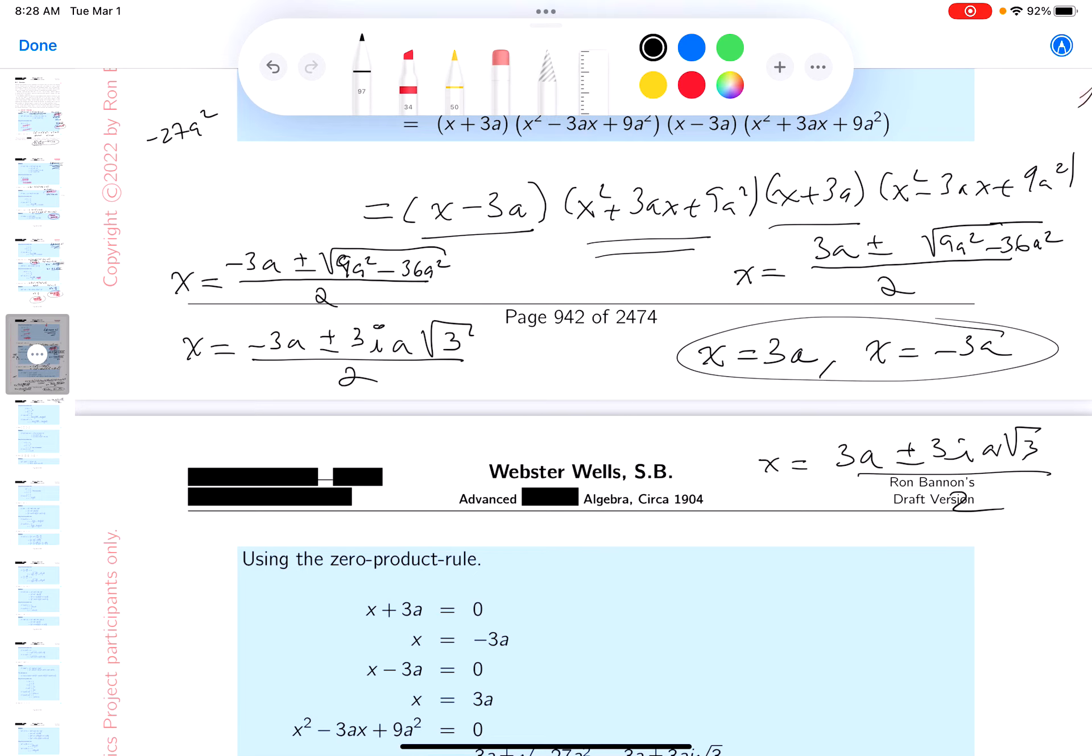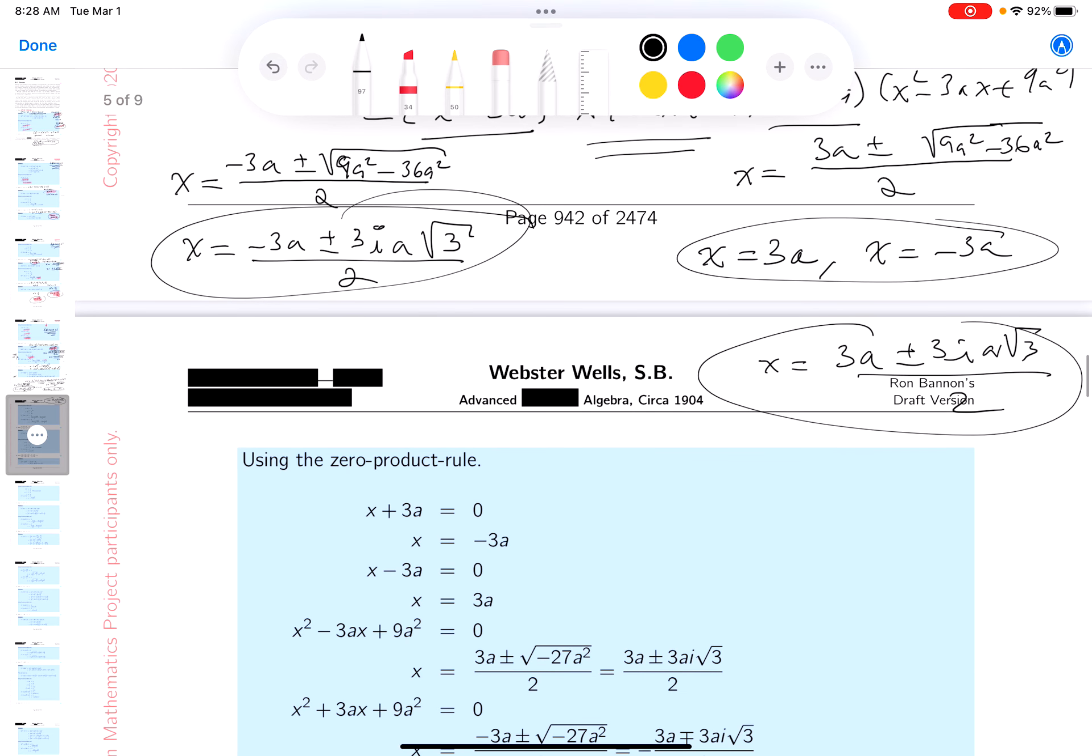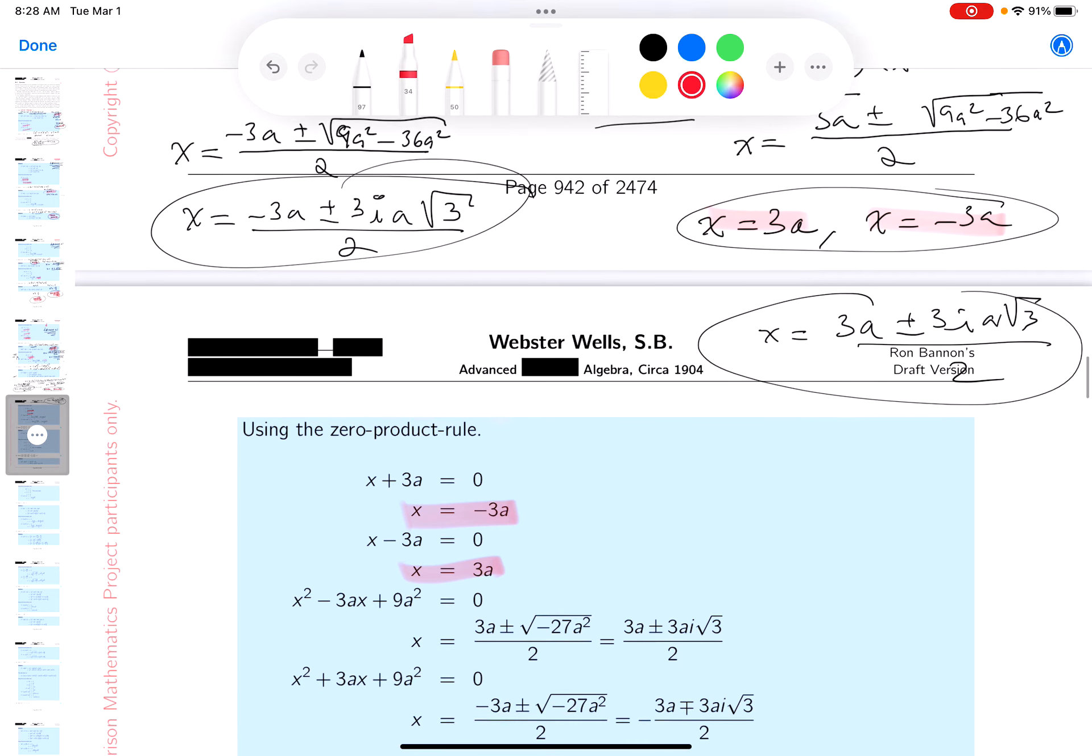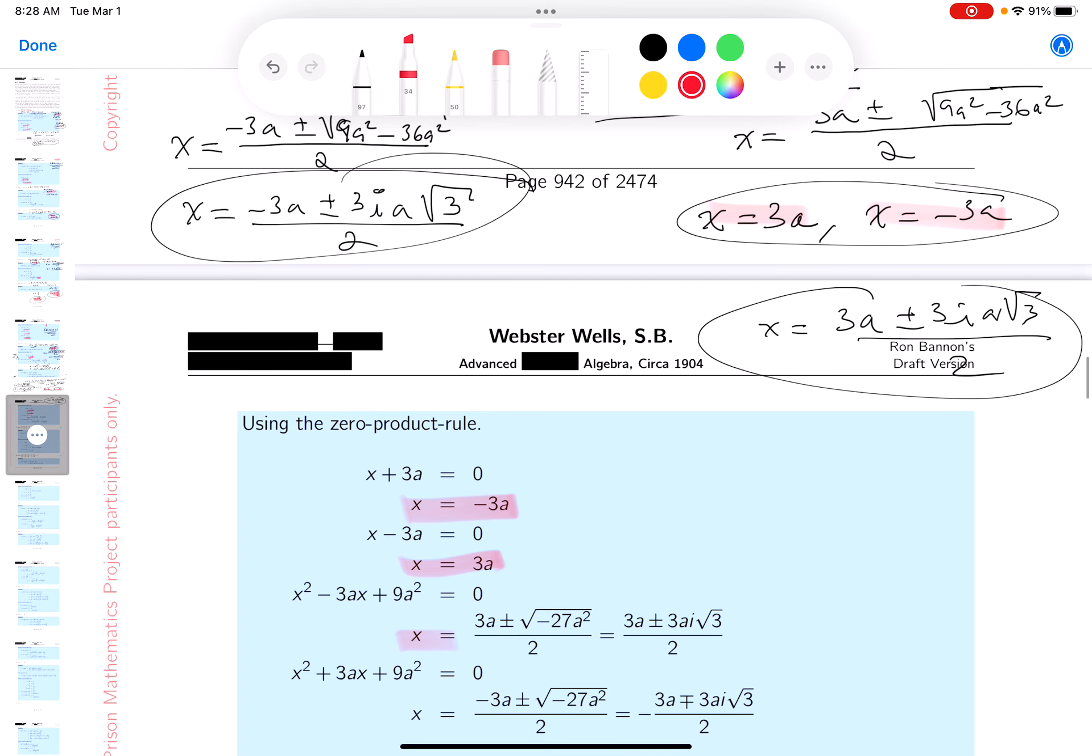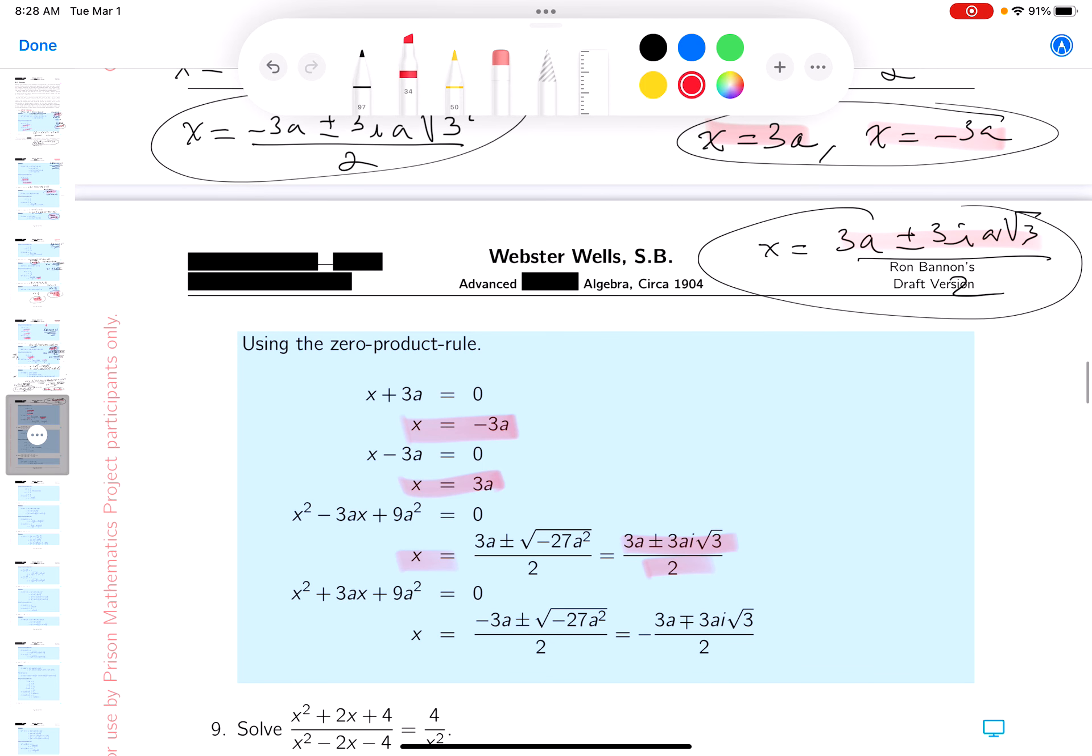Let me circle my answers. And you're getting 6, as we expected. Let's get a red pen out, see if we have them. And let's see if we have this one over here. 3a plus or minus 3ai√3 over 2. Let's see if we have the other one.